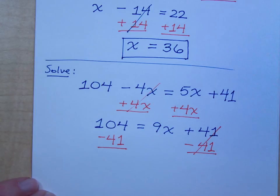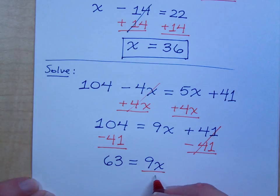And what does our equation look like now? Well, 63 is equal to 9x. I'm almost done. How do I get just plain x? Divide by the coefficient of 9.